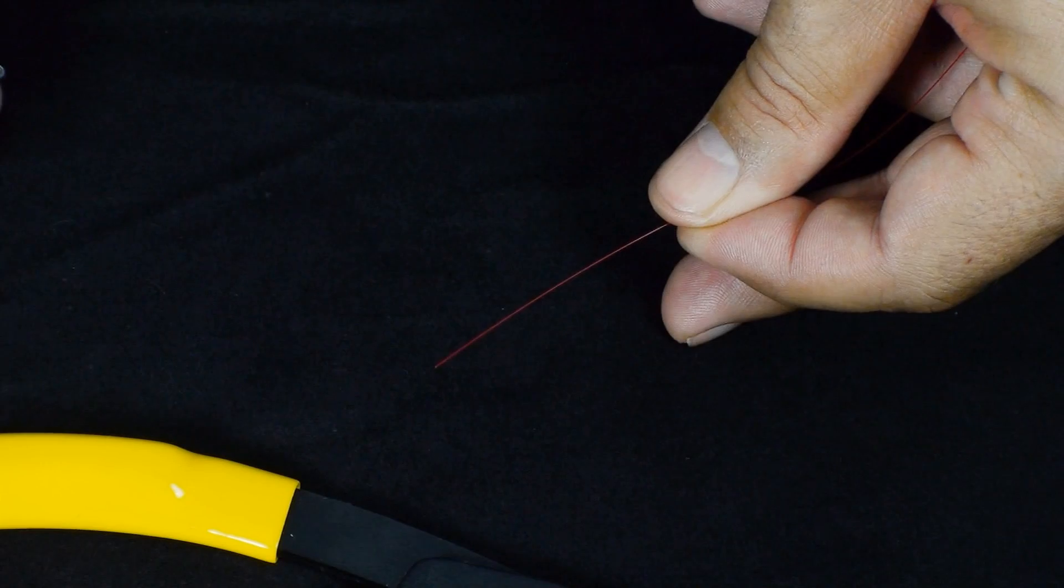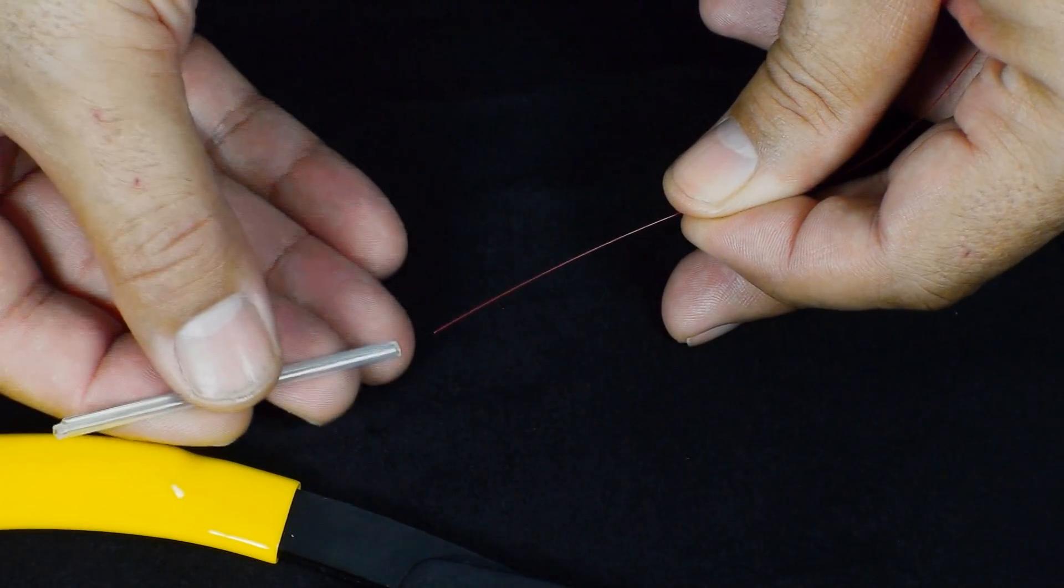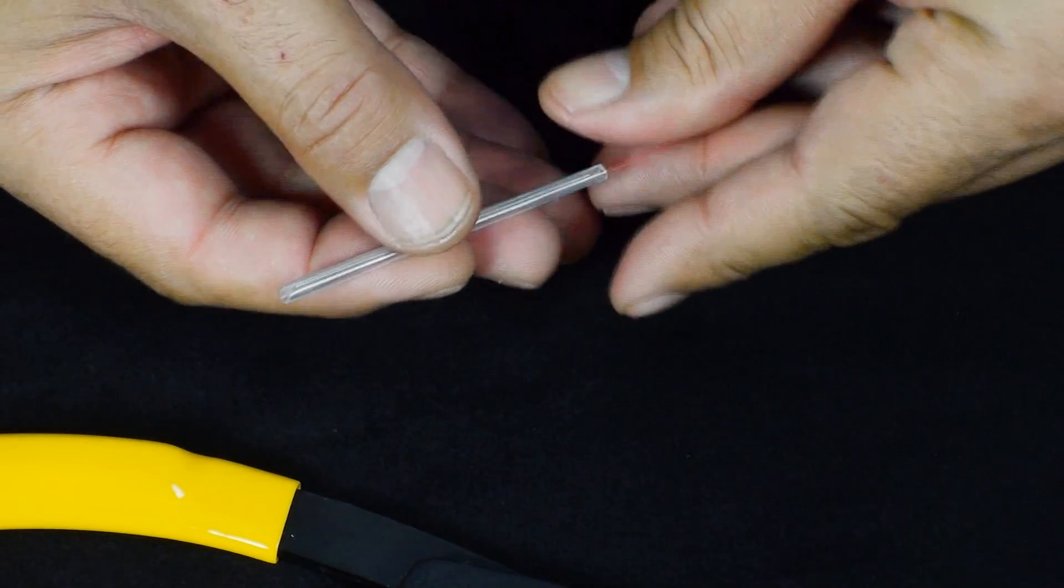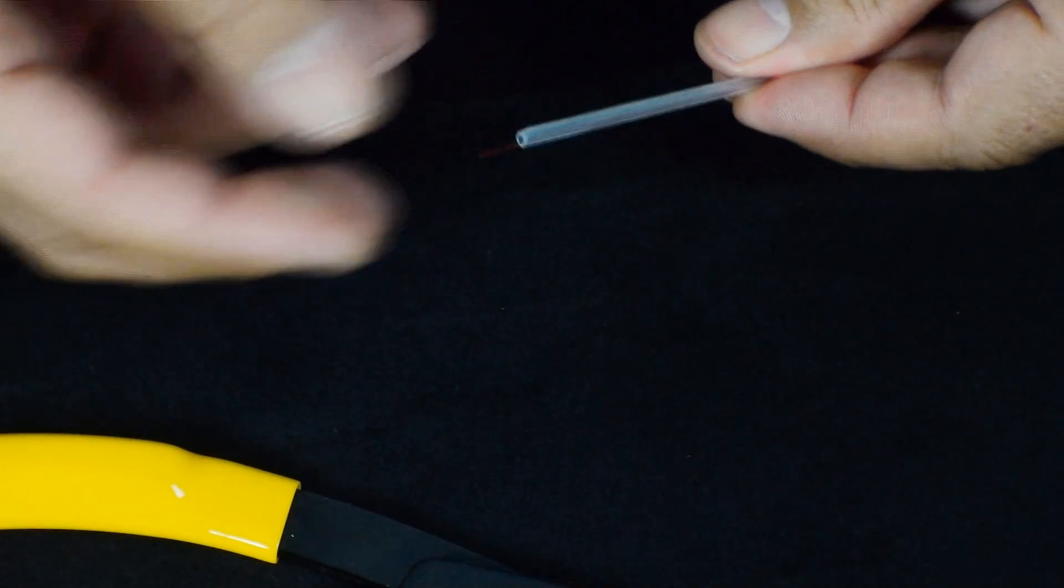We are now going to strip the fiber, but before that we have to introduce the fusion protection sleeve to protect the bare fiber once spliced.